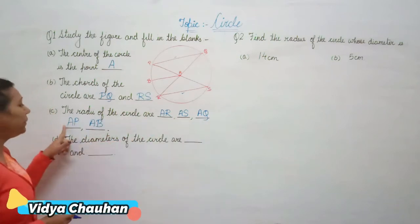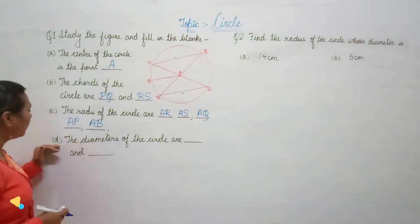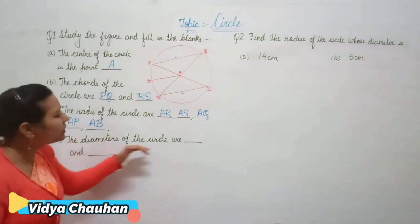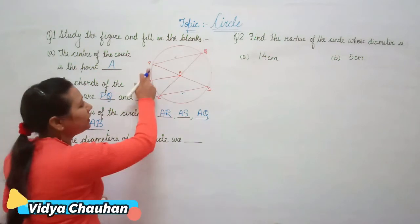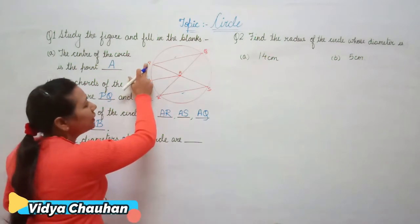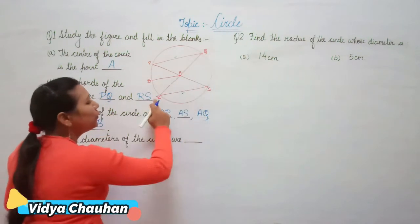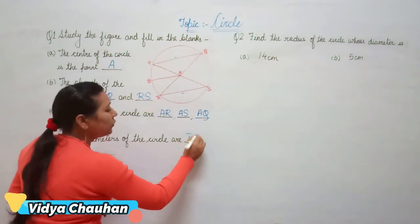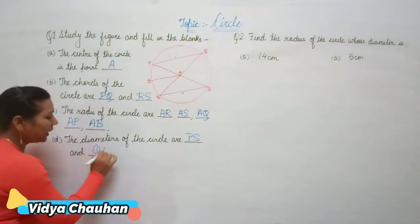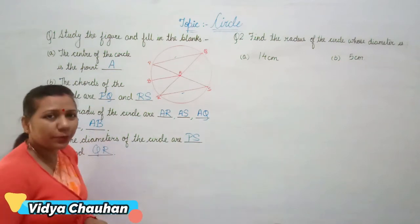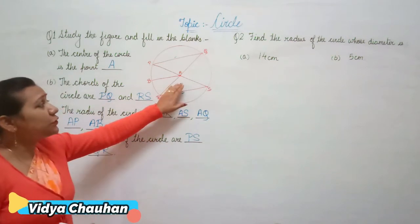So the five radii of the circle are AR, AS, AQ, AP, and AB. Coming to the fourth part: the diameters of the circle. There are two diameters present here — PS and QR. So PS and QR are the two diameters of the circle.